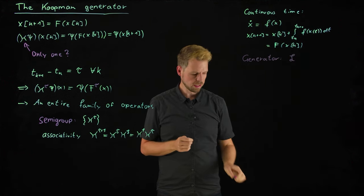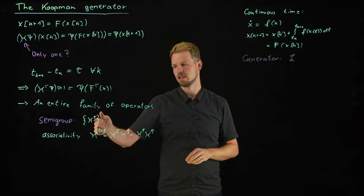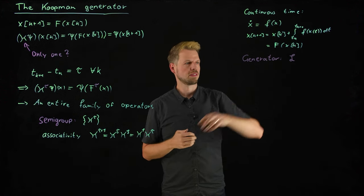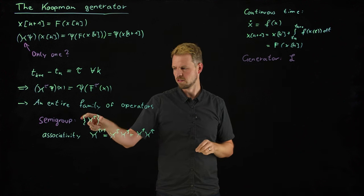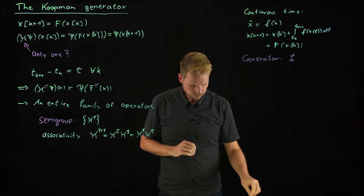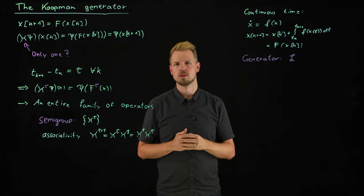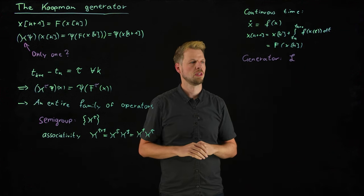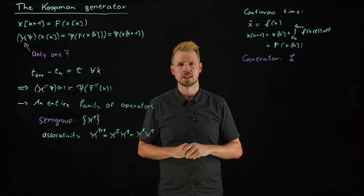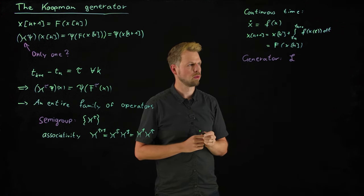Without going into too many details, what we can say is that each element of this group, infinitely many here, can be generated using this generator. So it's a very nice concept, a Lie group generator for this semigroup, and it can be constructed in a quite intuitive manner. There's a lot of mathematical details - I can put a reference in the comments where you can look up technical details.